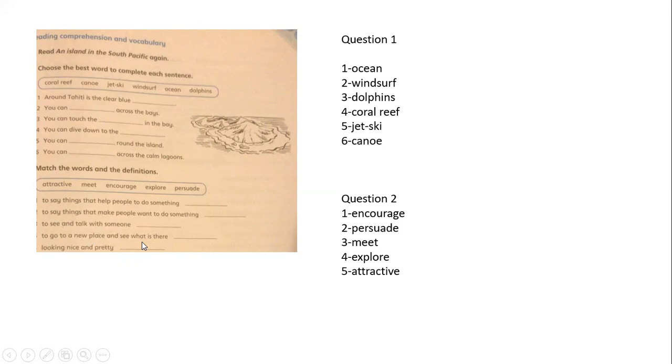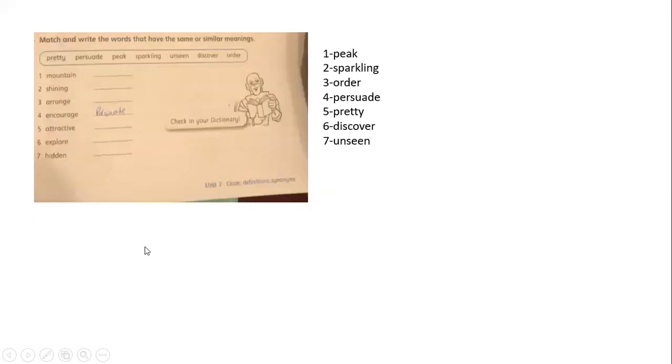The last question: match and write the words that have similar or the same meaning. We have pretty, pursuit, peak, sparkling, unseen, discover, order. Mountain would be peak. Shining, the same meaning with sparkling. Arrange with order. Encourage with pursuit. Attractive with pretty. Explore with discover. Hidden with unseen.